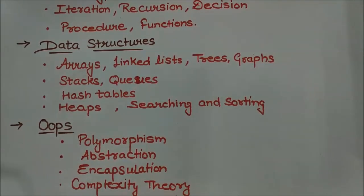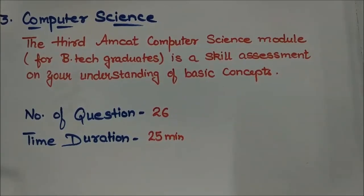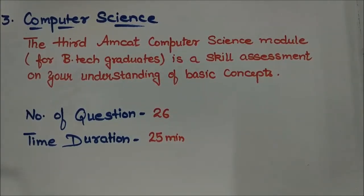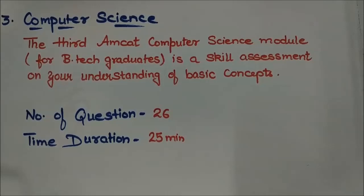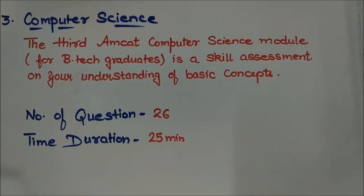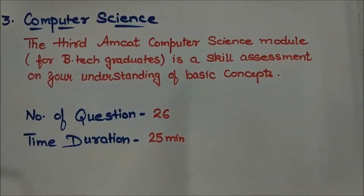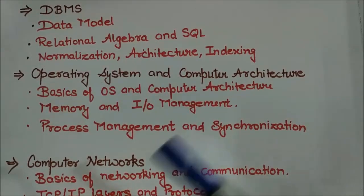After these two modules, the third one is the computer science test. This third MCAT computer science module is particularly for BTEC graduates and is a skill assessment on your understanding of basic concepts. The number of questions will be 26 and the time duration will be 25 minutes — please do not get confused, as in the first part there were 25 questions with 35 minutes. The topics you have to prepare for this section are as follows.